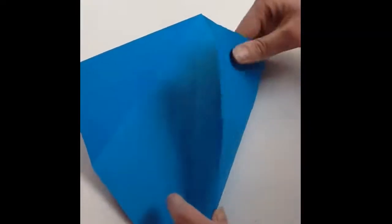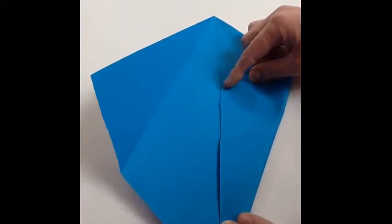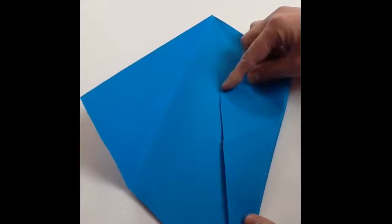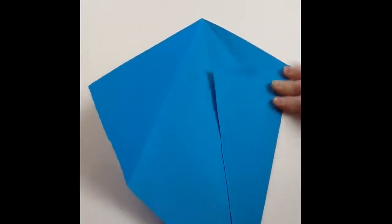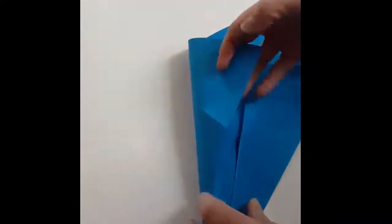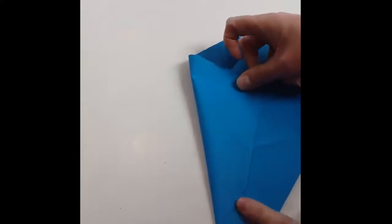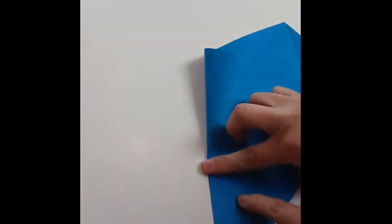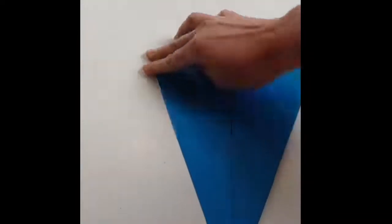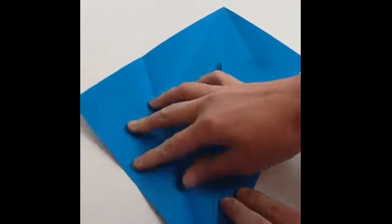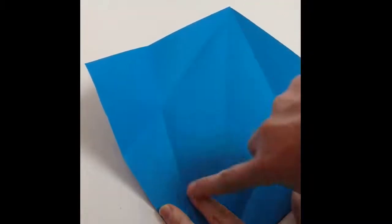You fold that bottom edge so that it's in the middle. And again, with the other edge. Press those down, and again, open them out. So you've got your square, but now it's got these extra crease lines on it.